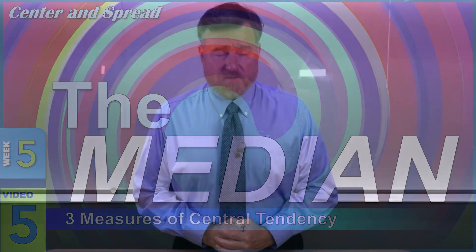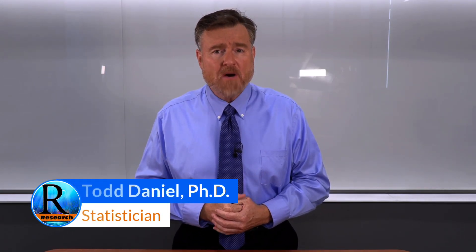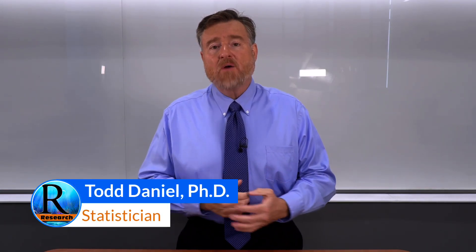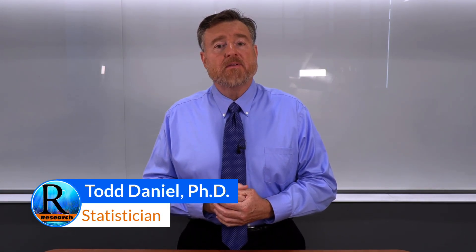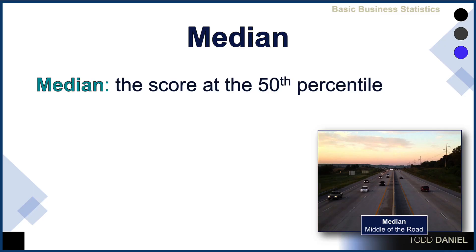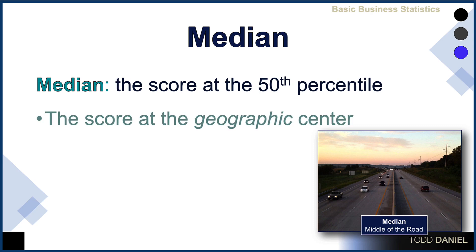We have three measures of central tendency: the mean, the median, and the mode. Now we're going to examine the median. The median is the score at the geographic center of the distribution. It is the score at the 50th percentile.